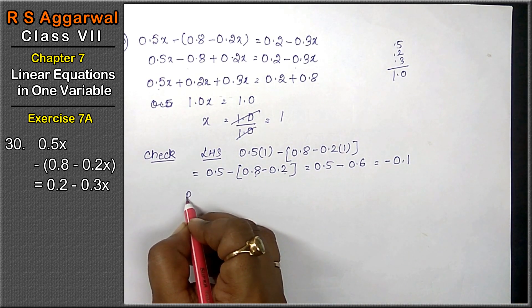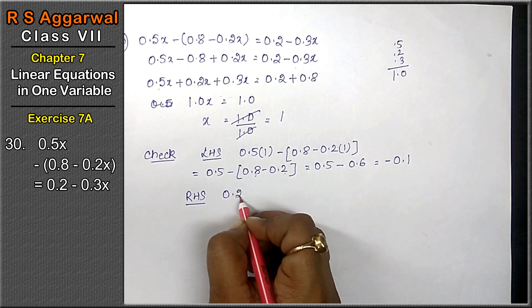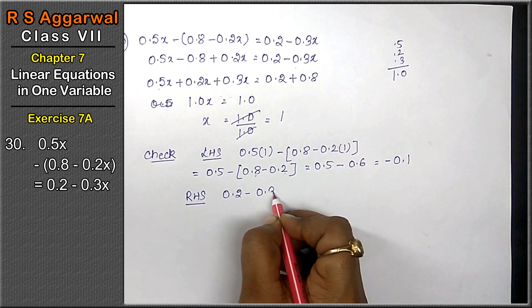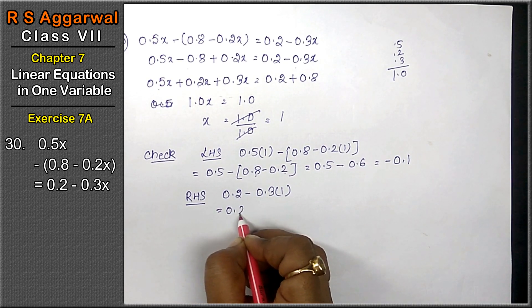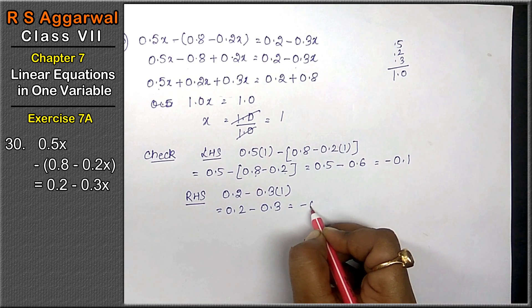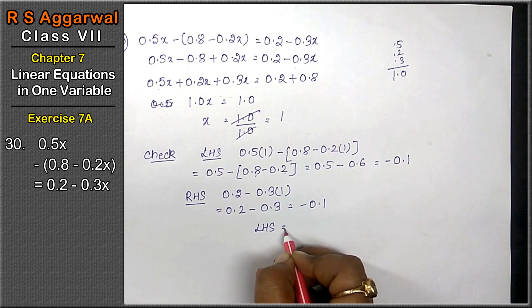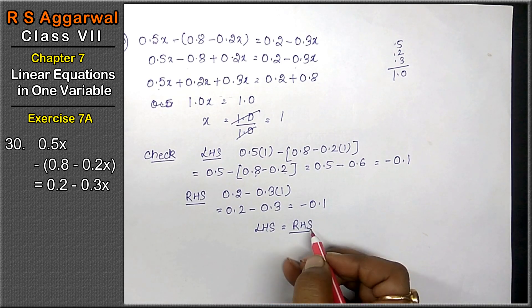Let's check the right hand side. Right hand side is 0.2 - 0.3(1). That means 0.2 - 0.3, which equals minus 0.1. That means left hand side equals right hand side.